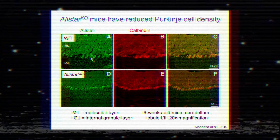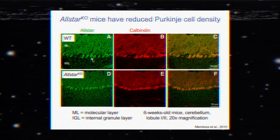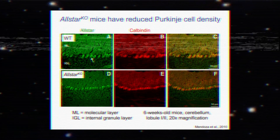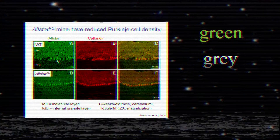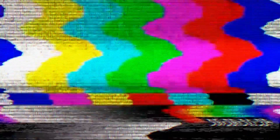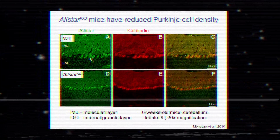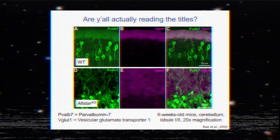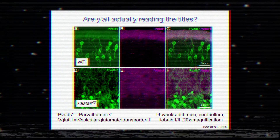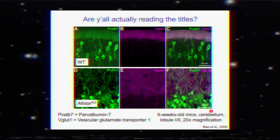When showing stained images, avoid using red and green together — this is to accommodate individuals that are red-green colorblind. My go-to colors are green, gray, magenta, and cyan. Label your stainings and define any abbreviations on your slide. For any image, always include a scale bar with the appropriate units.